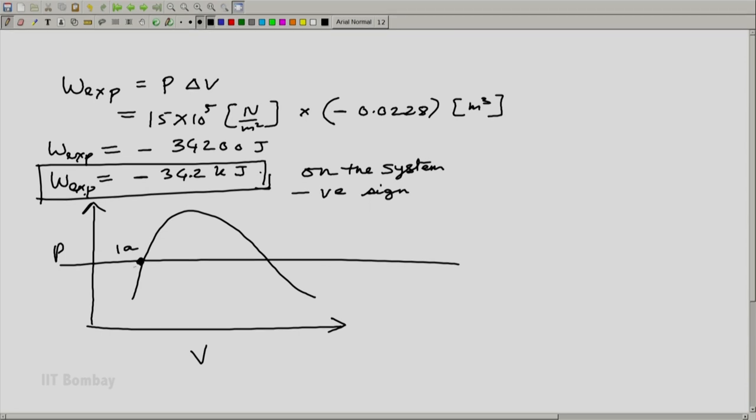So this is 1a, which is maintained at saturated liquid and at 15 bar. So this is point 1a. 1b, we have found that it is a superheated region. So somewhere around this point, 15 bar 250 degree centigrade, 15 bar saturated liquid.